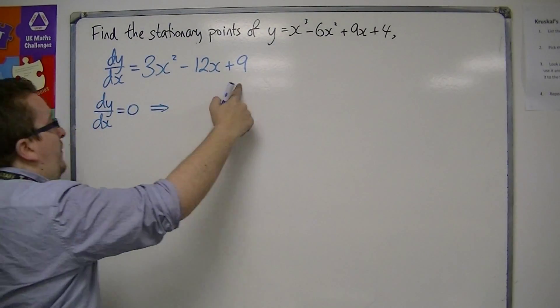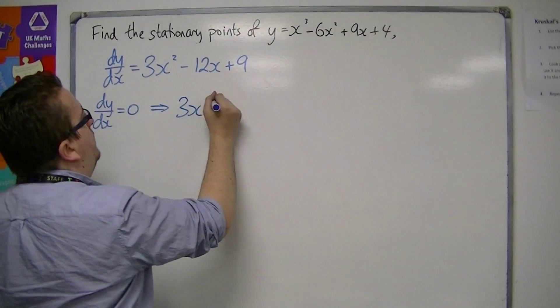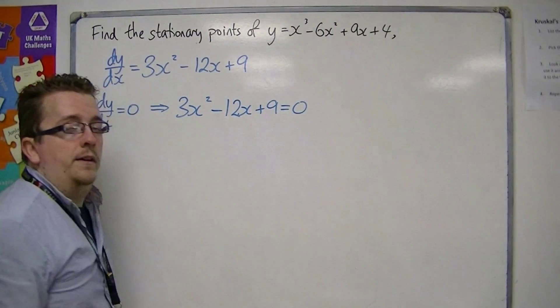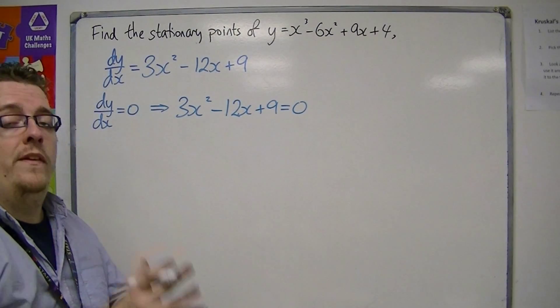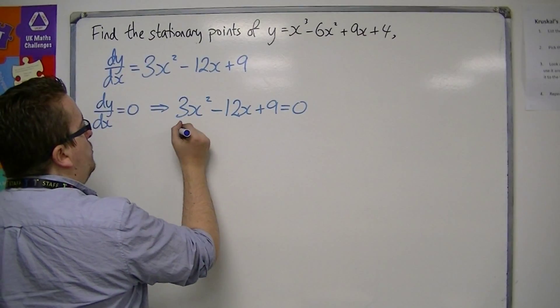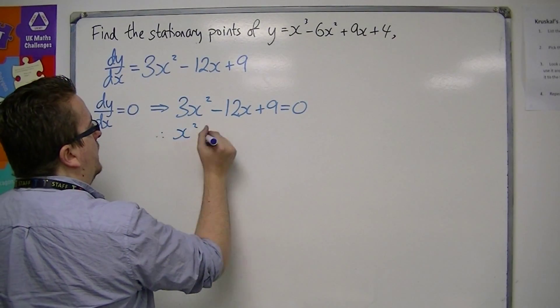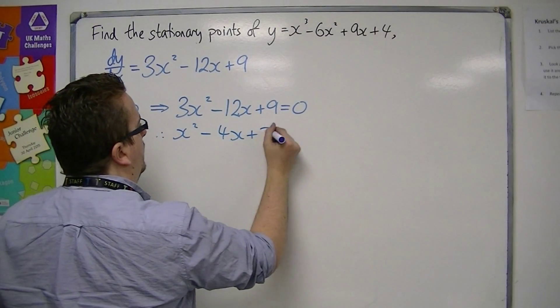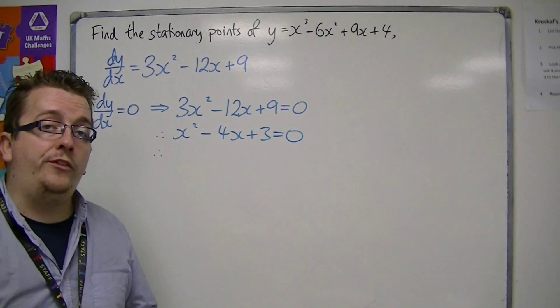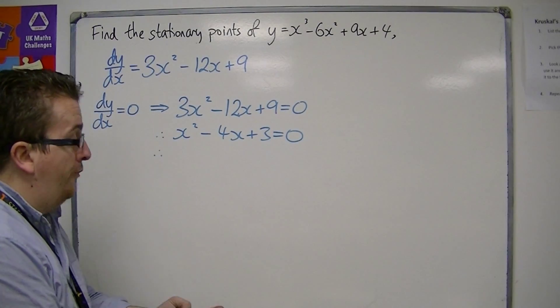So if we set our dy/dx equal to 0 and solve it, this will identify where the stationary points are. We can divide this through by 3, and then this is a quadratic that we can solve using quadratic formula or factorising.